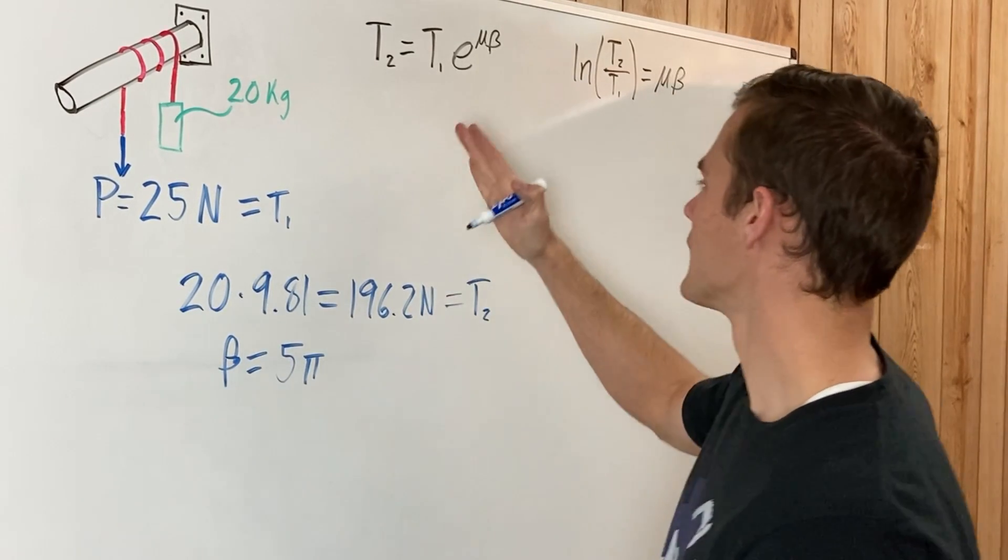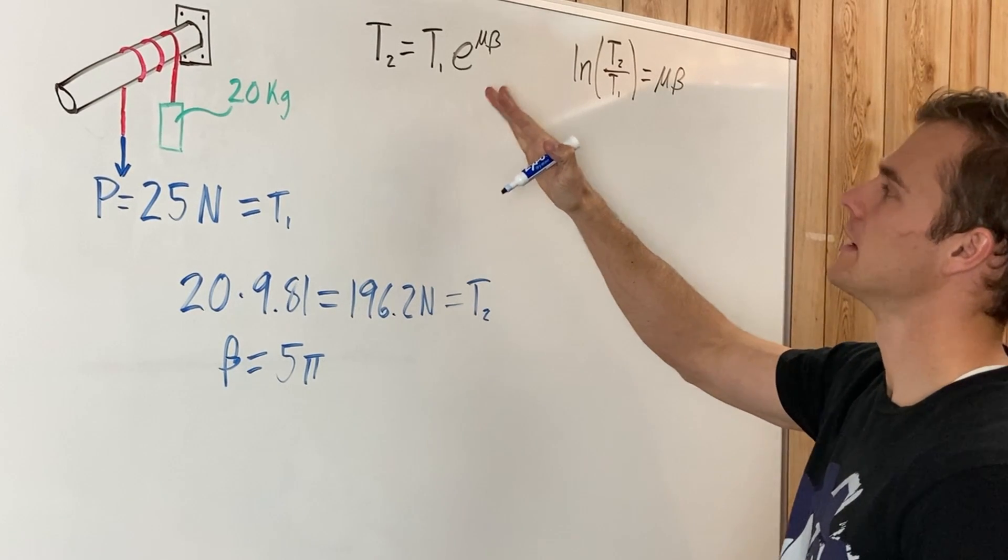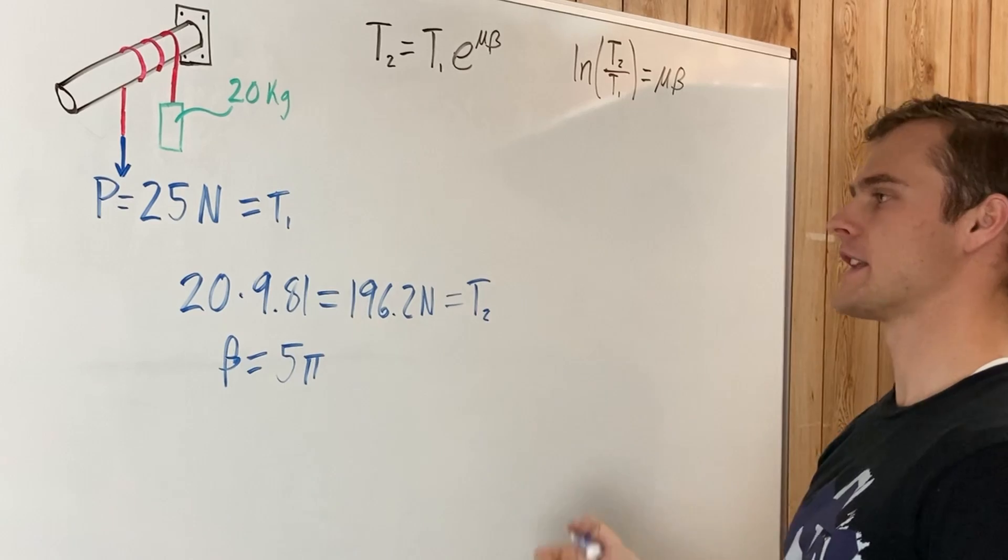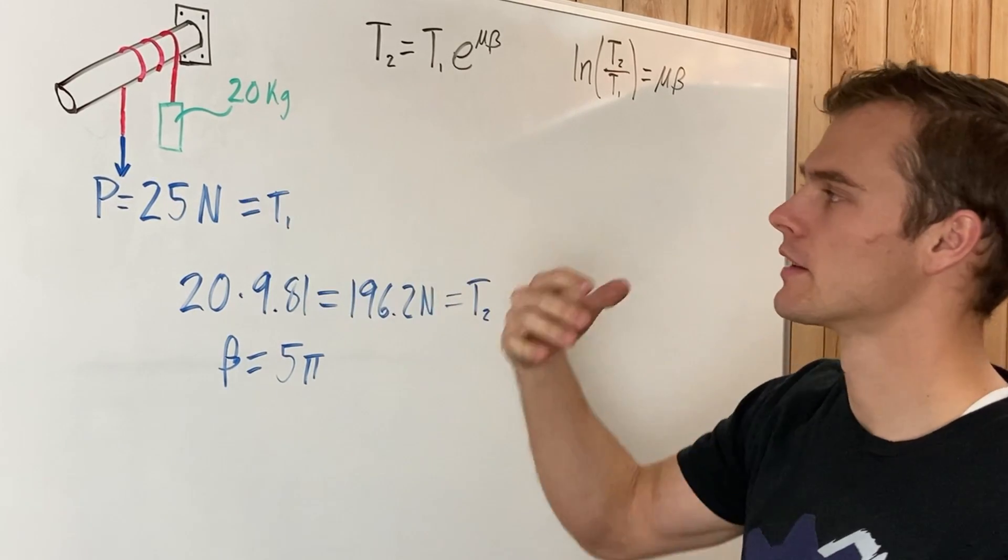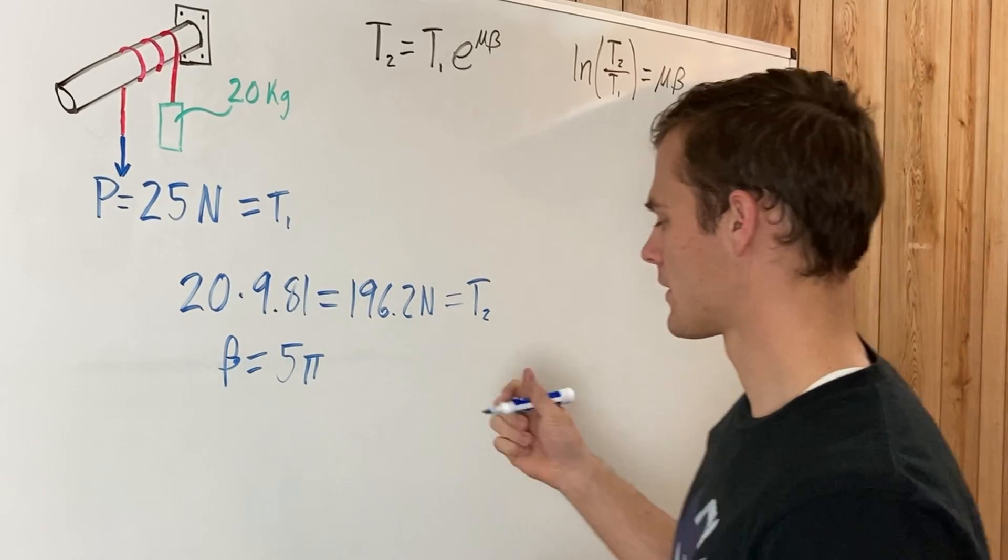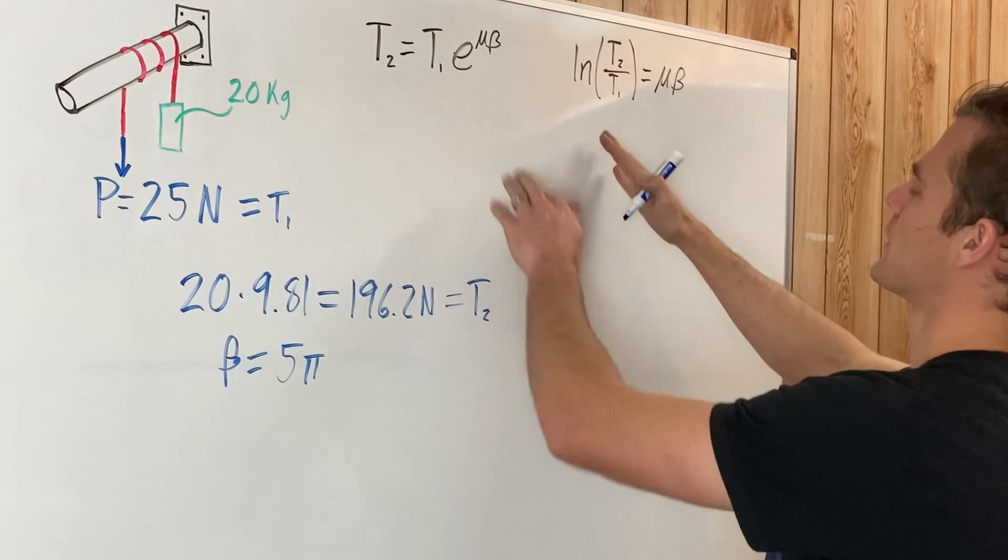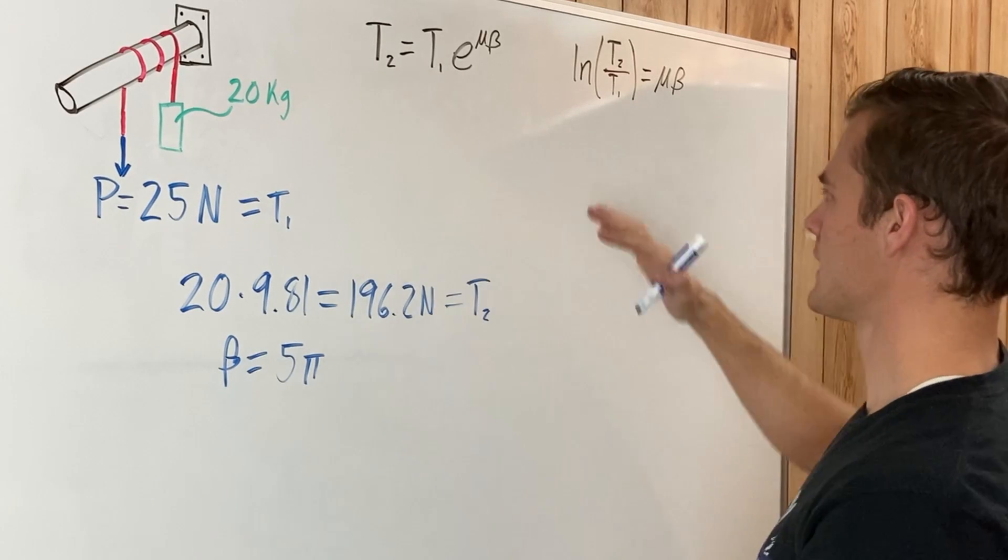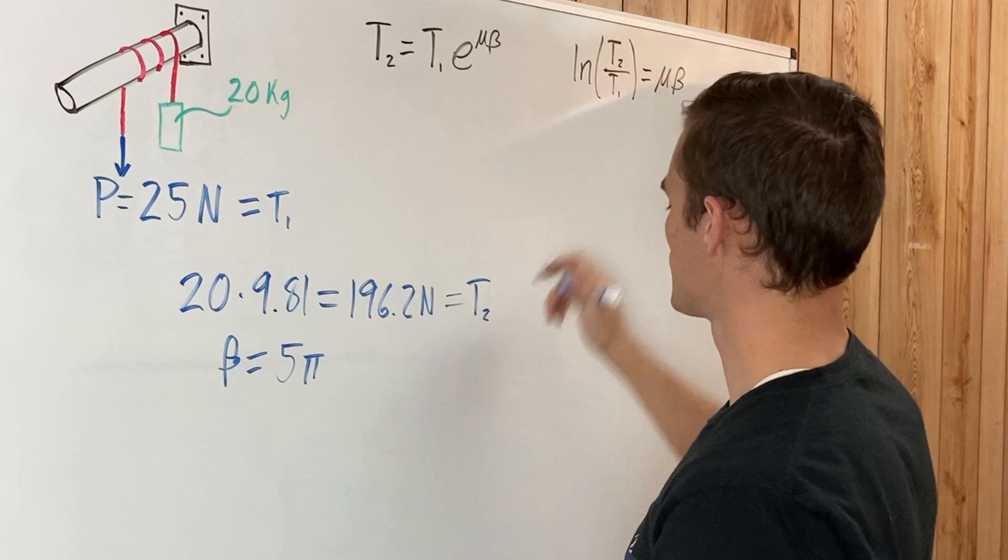And now the only thing left in this equation that we need to find out is mu, which is the coefficient of static friction. Because in this case, we're not moving, the rope isn't sliding along that rod. So we are going to use this equation. And remember, these two equations are the same, they're just in different forms. And so using this equation...